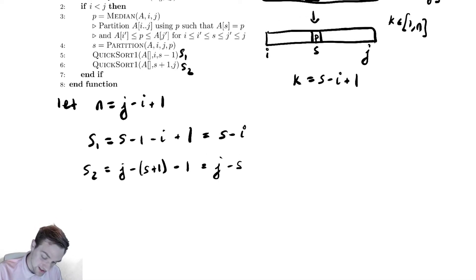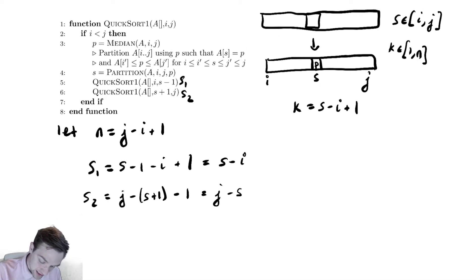So what are the sizes down here? I have an s minus i here. If I look at my expression that I use to define k, that looks a lot similar. So I can rearrange this to write it as k minus 1 is equal to s minus i. So this first recursive call is of size k minus 1.